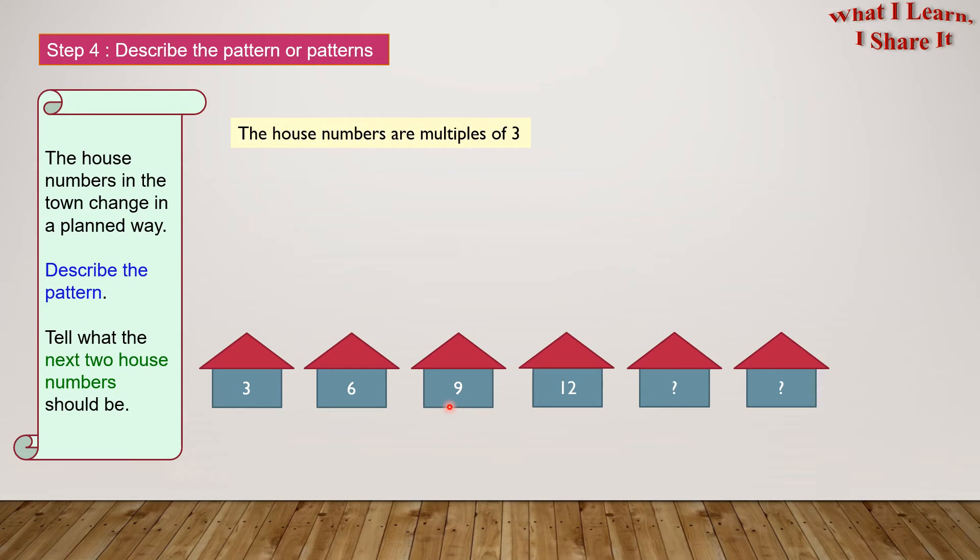The house numbers are multiples of 3. And the house numbers are continuously increasing by 3. So the pattern is times 3 or plus 3.